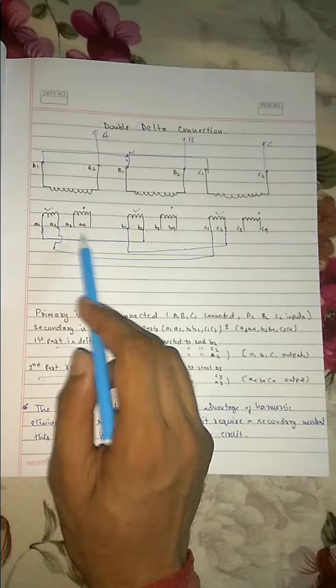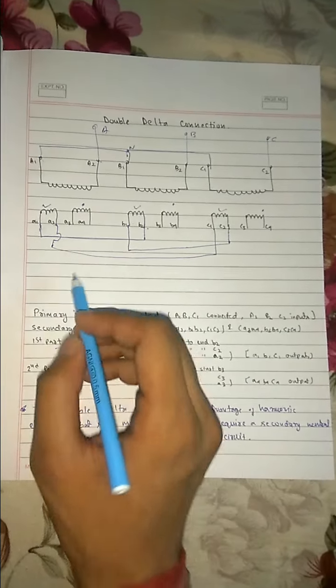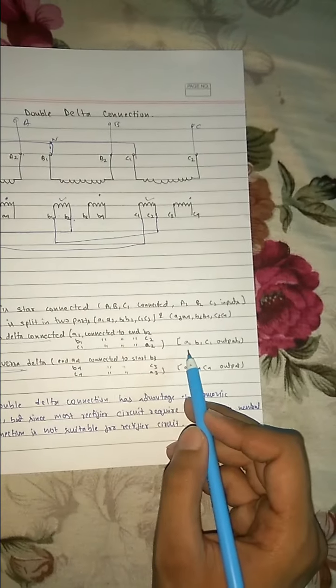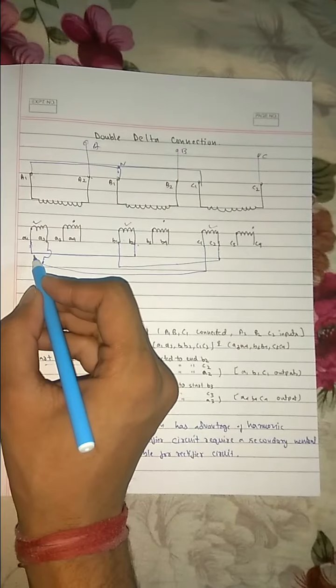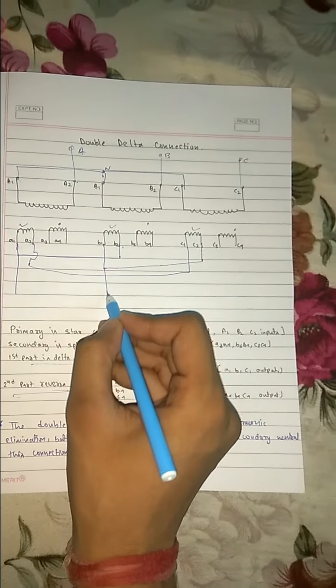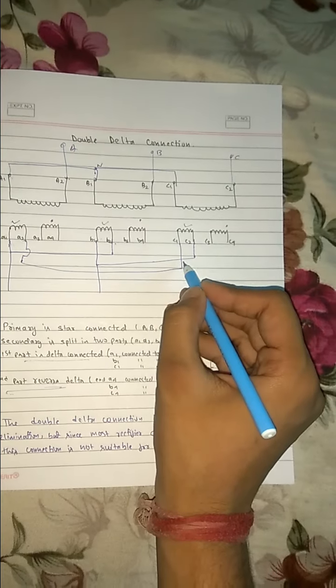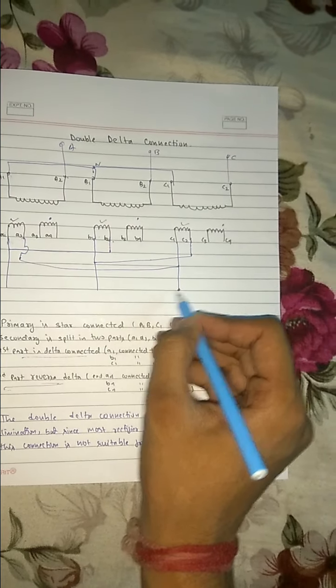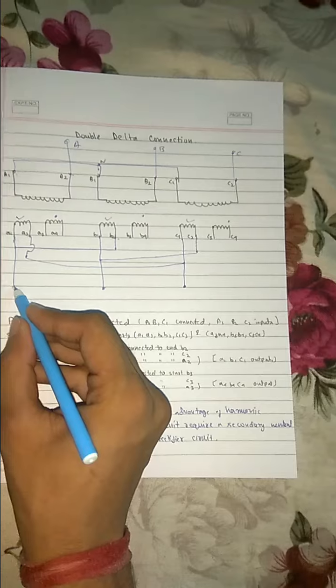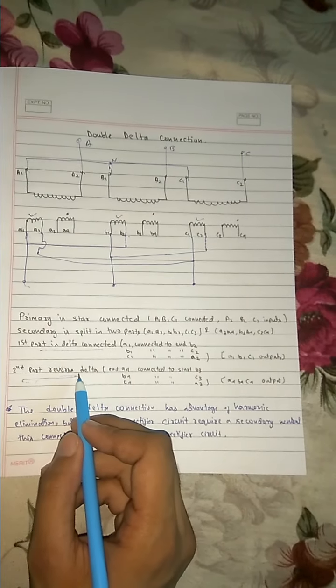So in the first part what we did, A1 first part is connected to the last part for all the three things. And the outputs we took as A1, B1, and C1. So this is our output A1, B1, and C1.